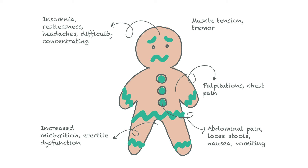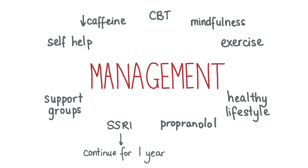Investigations in patients with suspected GAD include FBCs to rule out anaemia or infection, TFTs and glucose to rule out organic causes. Patients are managed using a biopsychosocial approach. First line pharmacological therapy is an SSRI, which is an anxiolytic. SNRIs like venlafaxine can be used second line, and gabapentin or pregabalin third line. Propranolol is often used to relieve physical symptoms like palpitations and tremor. Anxiolytic drugs must be continued for at least a year — unlike depression where medications are continued for at least 6 months. Comorbidities including depression and substance misuse should also be treated.